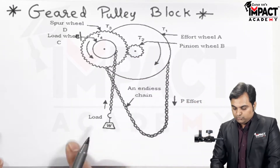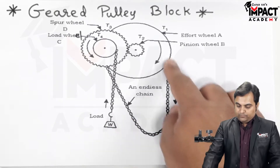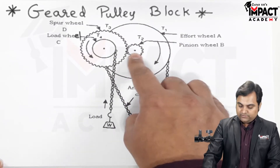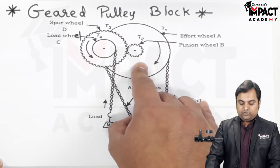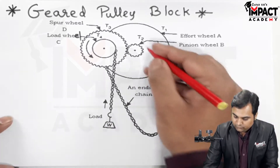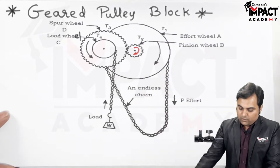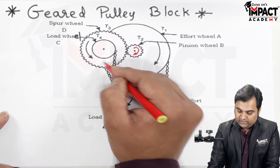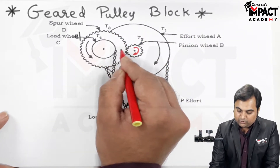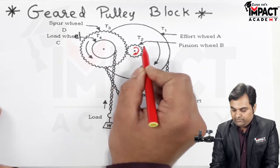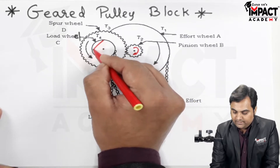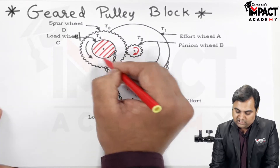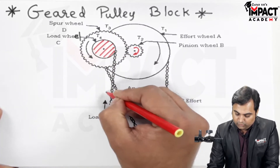When we apply effort by pulling this chain, the effort wheel rotates. When this effort wheel rotates, the pinion starts to rotate in the same direction because they are in mesh, rotating in a clockwise direction. Once this pinion starts rotating clockwise, it is in mesh with another spur wheel having T3 teeth, so it rotates in an anti-clockwise direction — because these are external gears, if one rotates clockwise the other rotates anti-clockwise. The load drum is on the same axis as spur wheel D, so it also starts rotating anti-clockwise, and in this way the load gets lifted.